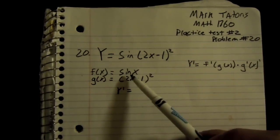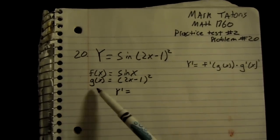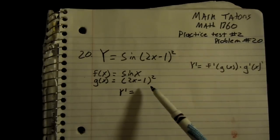The outside function is f of x equals sine of x, and the inside function is g of x equals 2x minus 1 squared.